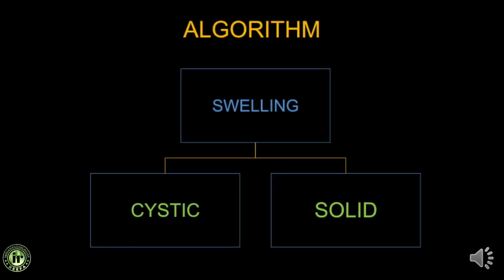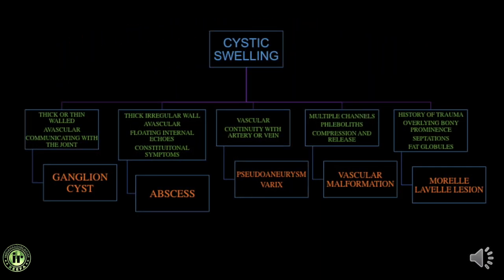Broadly, the first thing to note about a soft tissue swelling is whether it is solid or cystic. If the swelling is thick or thin-walled, avascular, and shows communication with the joint or adjacent tendon, you are probably dealing with a ganglion cyst. If the swelling has a thick irregular wall, is avascular, shows floating internal echoes, and the patient has constitutional symptoms like fever, then you are probably dealing with an abscess.